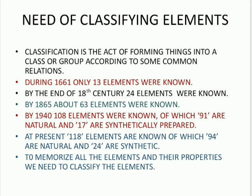During the 1660s, only 13 elements were known to human beings. By the end of the 18th century, 82 elements were known. By 1865, about 63 elements were known. By the 1940s, 108 elements were known, of which 91 are natural and 17 are manmade. At present, there are 118 elements, out of which 94 are natural and 24 are synthetic.